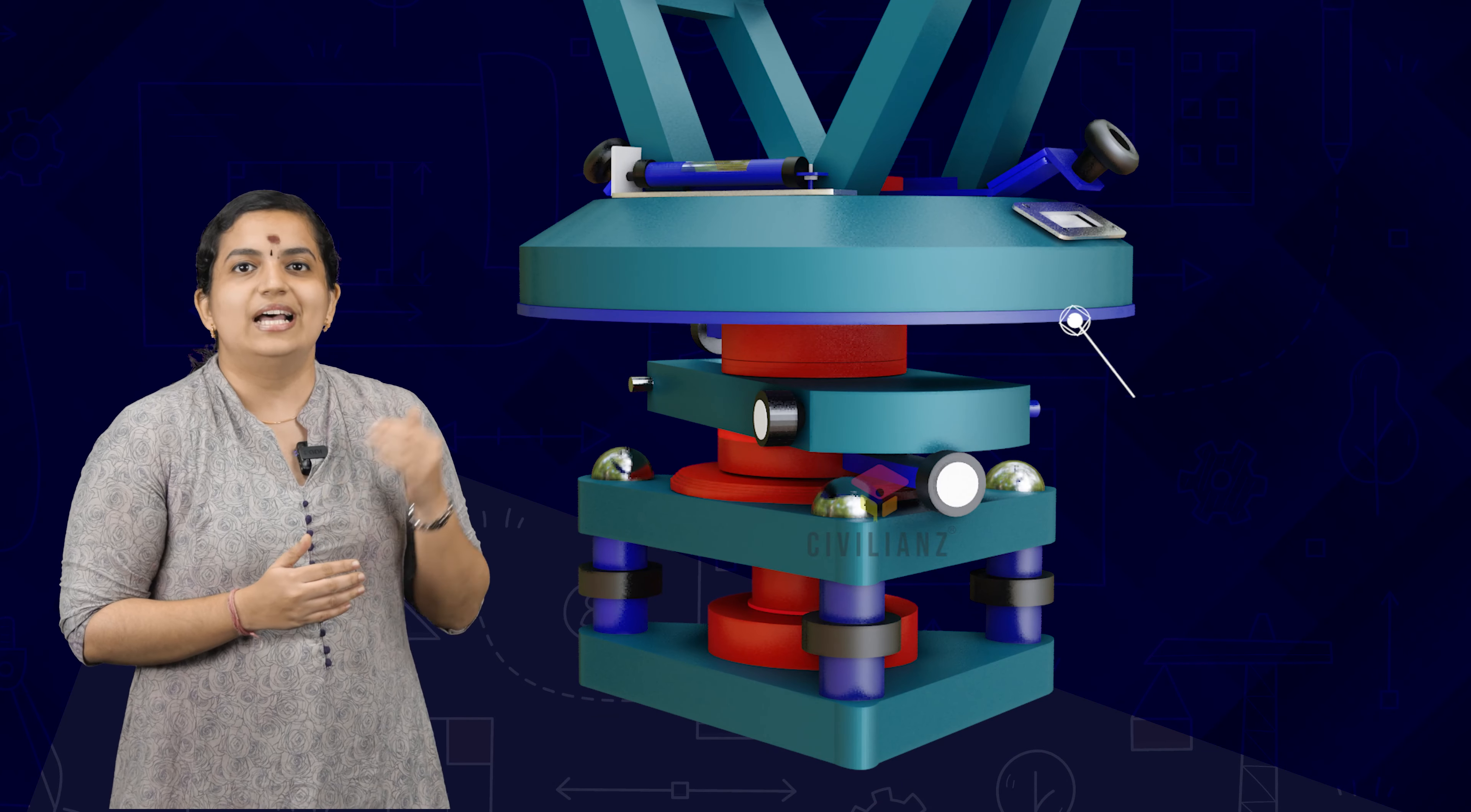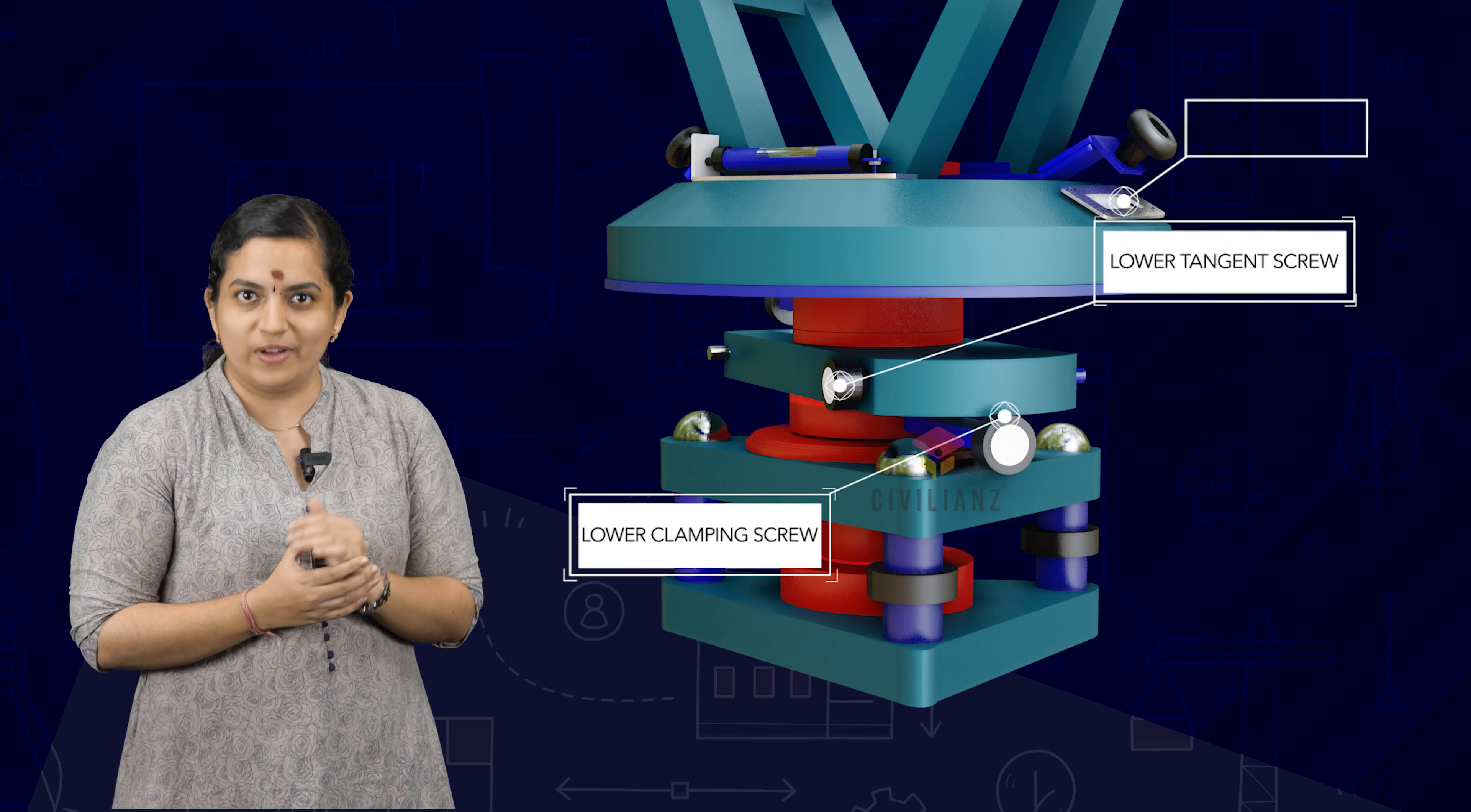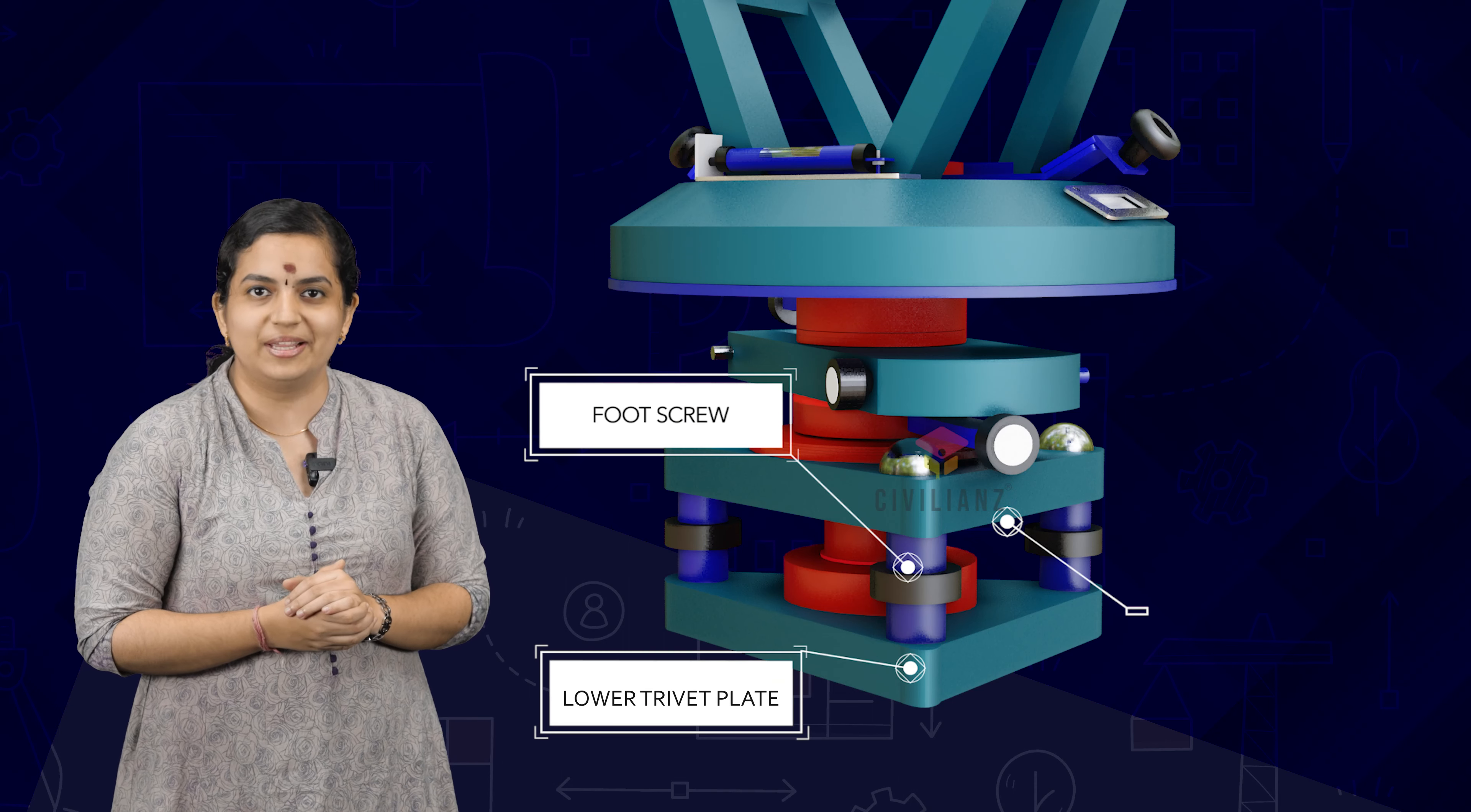The lower plate of the theodolite carries a horizontal graduated circle called the main scale on its beveled edge. The lower plate also carries a lower clamping screw and the corresponding slow motion screw or tangent screw. The leveling head of a theodolite consists of two parallel triangular plates called tribrac plates.